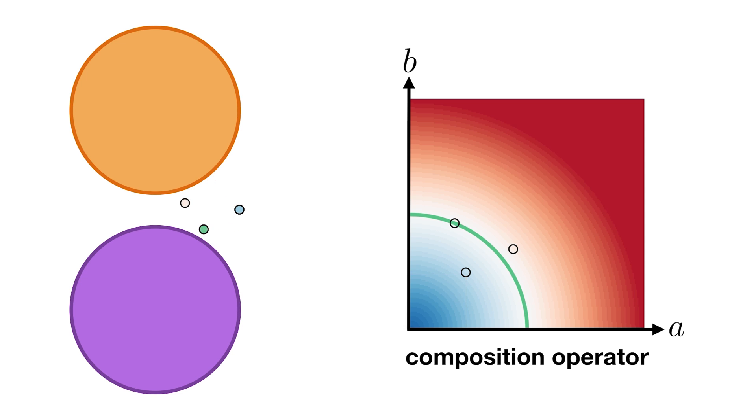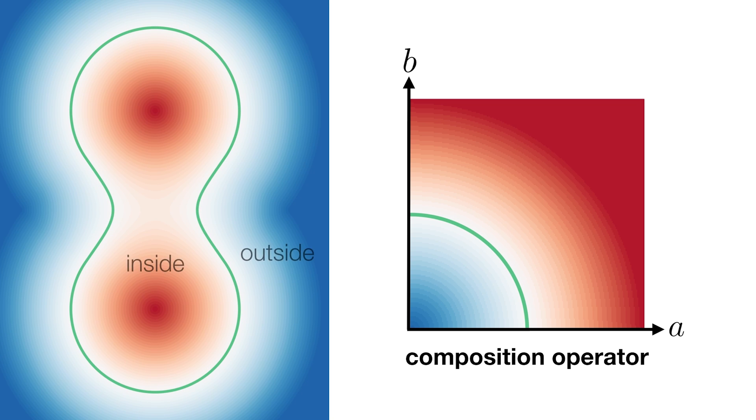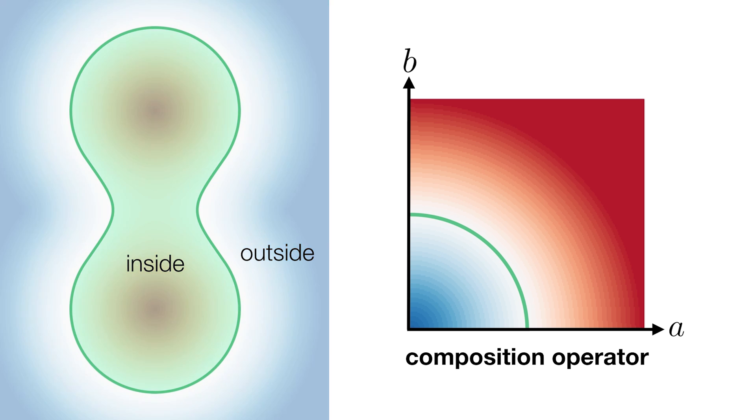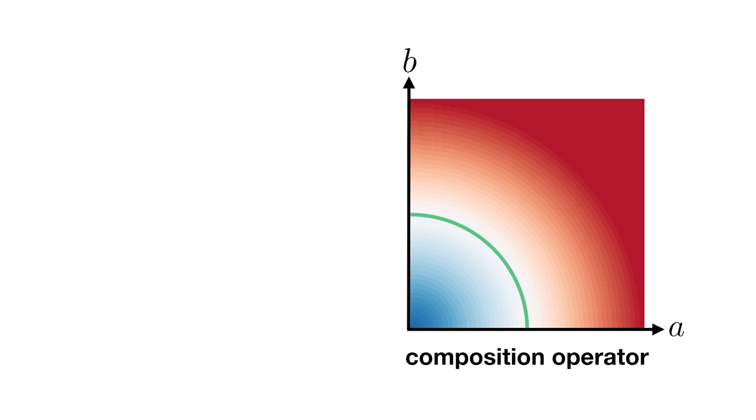Operators are typically binary, taking the field values of the two shapes as input, and returning the value of the resulting field. Thus, the space in which these operators are defined is two-dimensional.